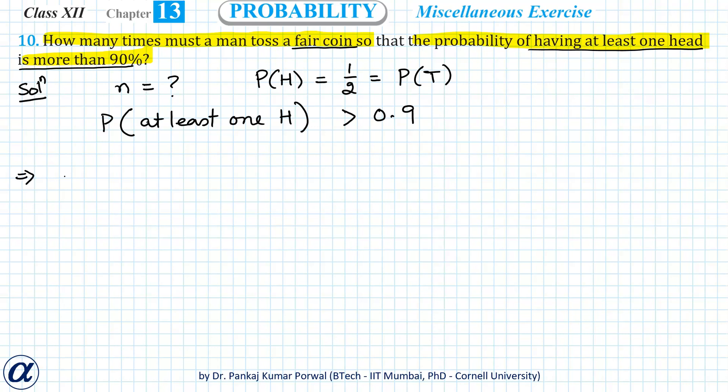So probability of at least one head equals one minus probability of no head, and this should be greater than 0.9.